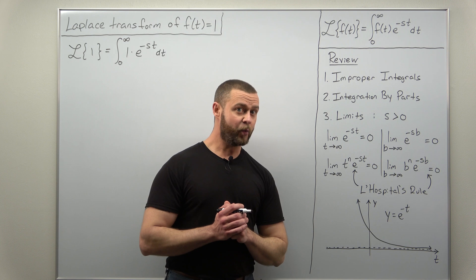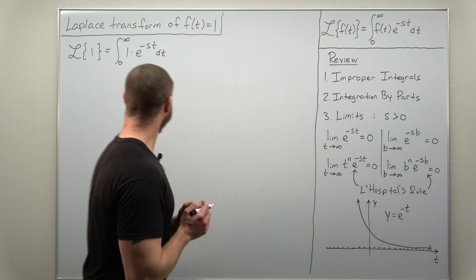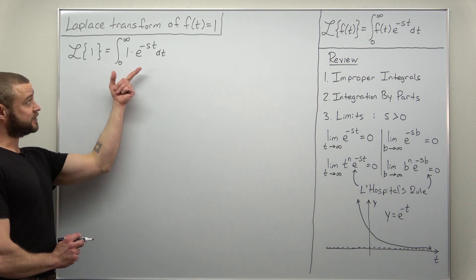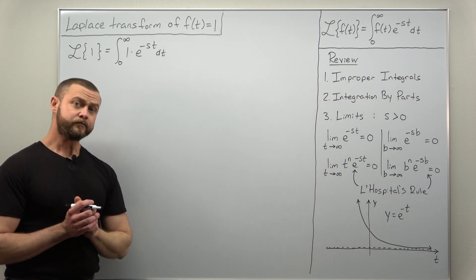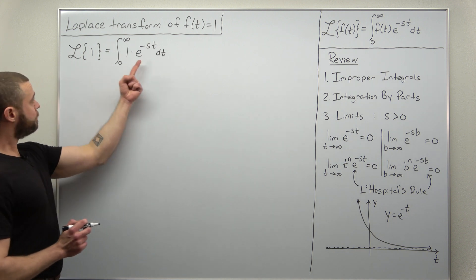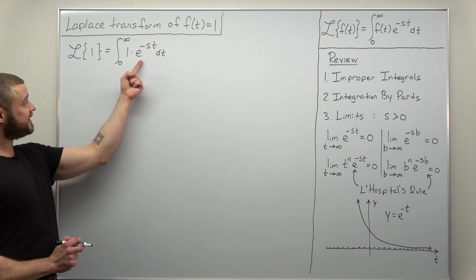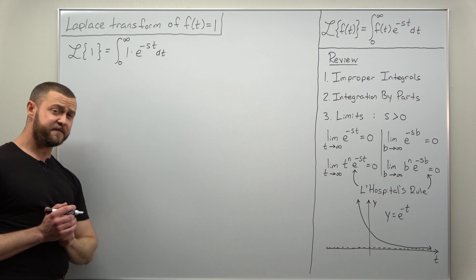So with all that out of the way, let's get to the first steps in setting up the Laplace transform for f of t equals one. So we take our function, multiply it by e to the negative st, and integrate it over t from zero to infinity.